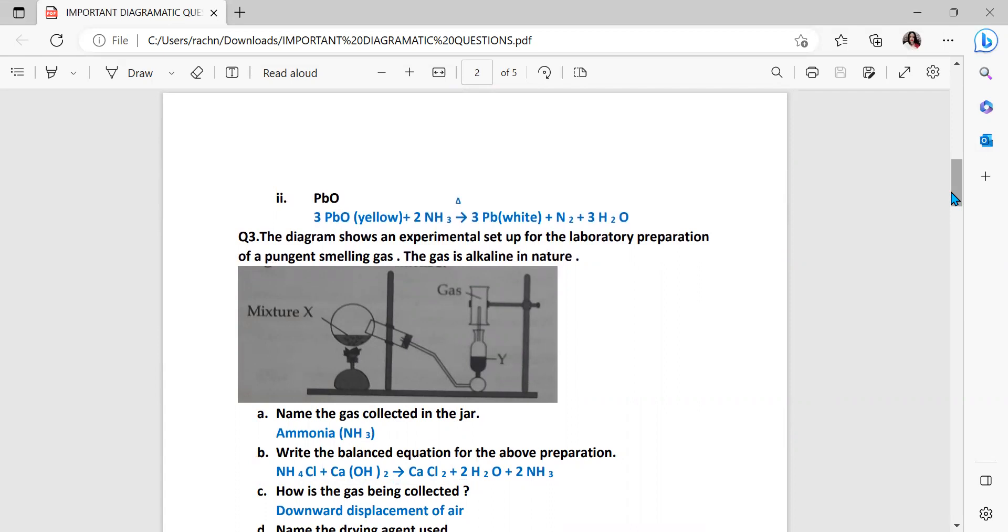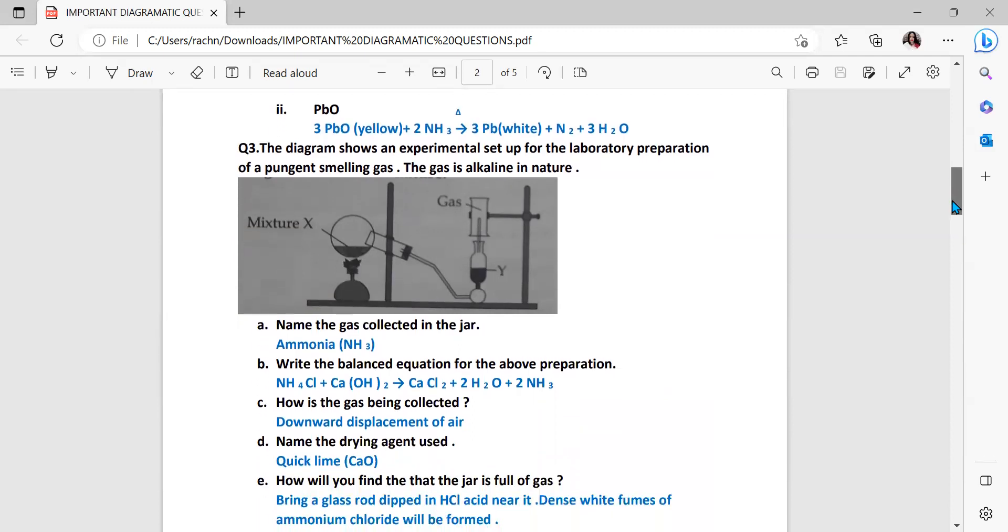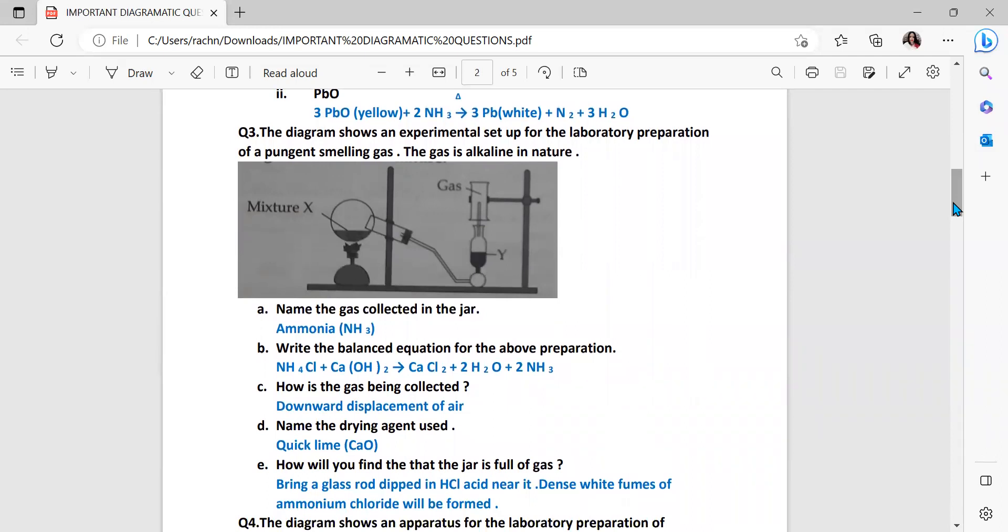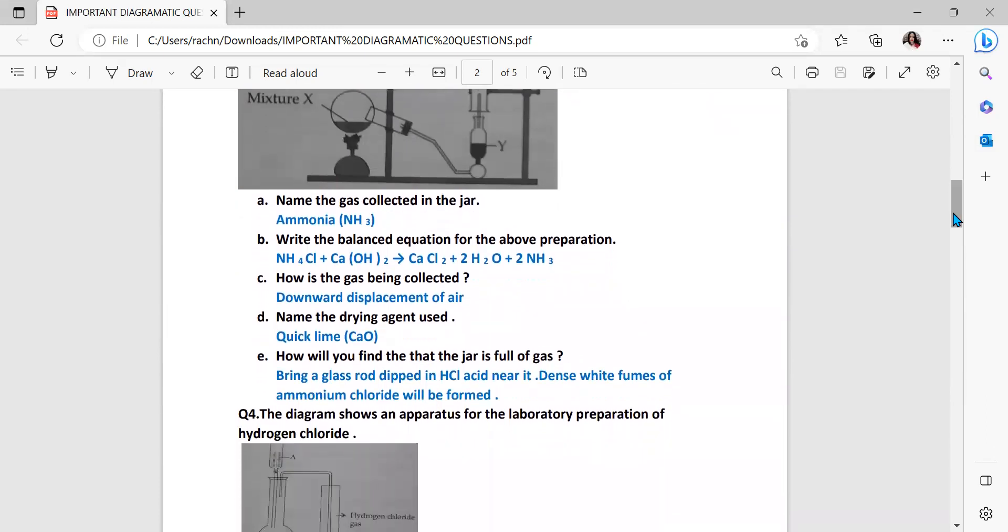Question number three. The diagram shows an experimental setup for the lab preparation of a pungent smelling gas. The gas is alkaline in nature. Here please pay attention, your HCl is also a pungent smelling gas, so don't be in a hurry to write a wrong answer. That is why they have given a statement that the gas is alkaline in nature, and the only gas which is in our ICSE syllabus which is alkaline in nature, that is your ammonia. Name the gas collected in the jar - it will be ammonia. Write the balance equation for the above preparation: NH4Cl plus calcium hydroxide gives CaCl2 plus H2O plus NH3. How is the gas collected? By the downward displacement of air. Name the drying agent used - it is quicklime. How will you find that the jar is full of gas? This indirectly they are asking their chemical property. Bring a glass rod dipped in HCl acid near it, dense white fumes of ammonium chloride will be formed.